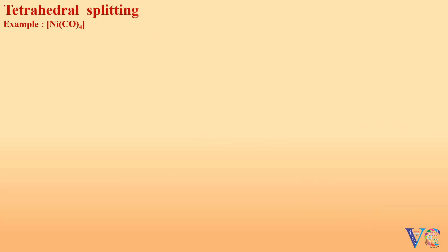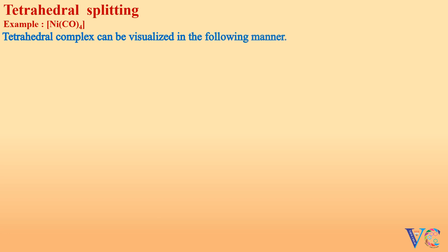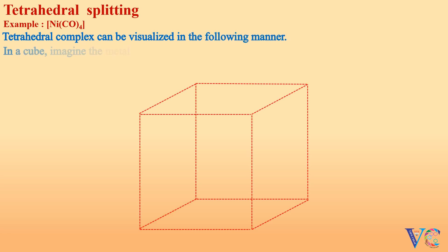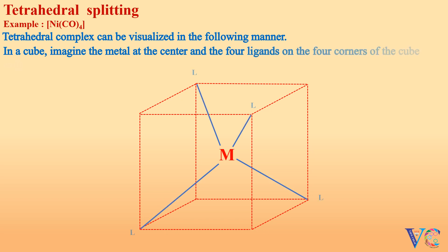Tetrahedral splitting. A tetrahedral complex can be visualized in the following manner: in a cube, imagine the metal at the center and the four ligands on the four corners of the cube with tetrahedral geometry.